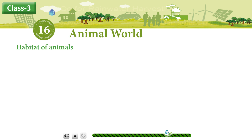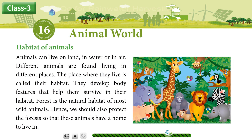Habitat of animals. Animals can live on land, in water, or in air. Different animals are found living in different places. The place where they live is called their habitat. They develop body features that help them to survive in their habitat. Forest is the natural habitat of most wild animals. Hence, we should also protect the forest so that these animals have a home to live in.